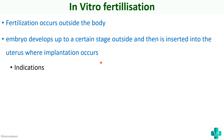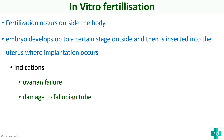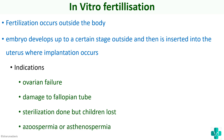The indications for in vitro fertilization are ovarian failure, damage to the fallopian tube — since normally fertilization occurs in the ampulla of the fallopian tube — and cases where sterilization was done but children were subsequently lost, since the tube may have been cut, preventing natural fertilization. Azoospermia or asthenospermia are also indications for IVF.